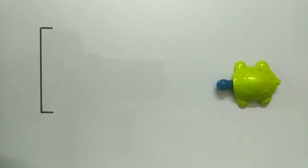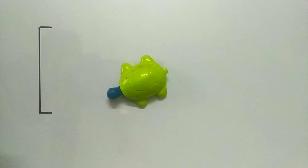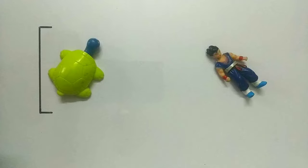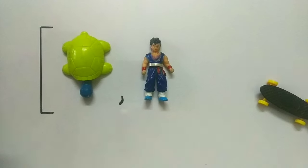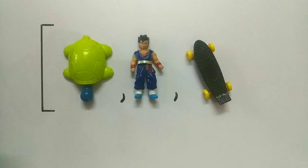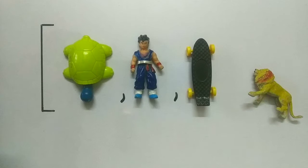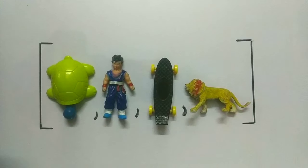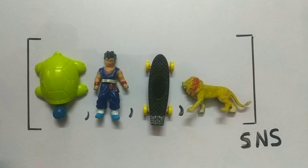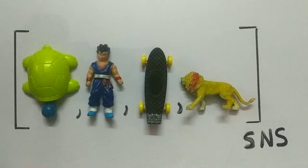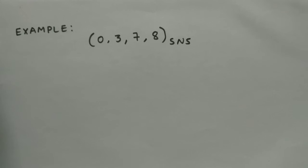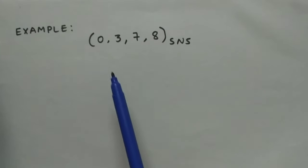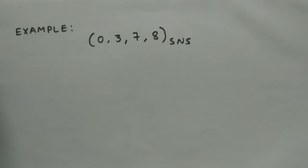So what if our number system consists of the following values: a turtle, a hermit man, a skateboard, and a lion — with a base of SNS? Okay, that was the fun part. Now let us take an example of a special number system consisting of values 0, 3, 7, and 8, having a base of SNS.